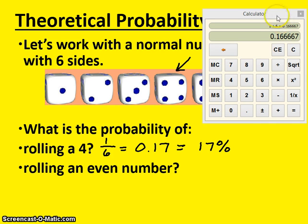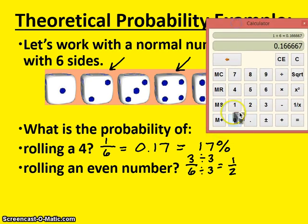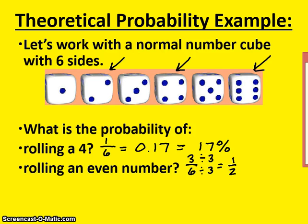Let's look at another example. What is the probability of rolling an even number? Well, how many even numbers are on the dice? There are 1, 2, 3. So there's a 3 out of 6 chance of rolling an even number. 3/6 is a non-simplified fraction, so we can reduce that by 3 to get 1/2. There's a 1/2 chance. If you divide 1 by 2, you will get 0.5, which is the same as 0.50, which is 50%. There is a 50% chance that you will roll an even number.